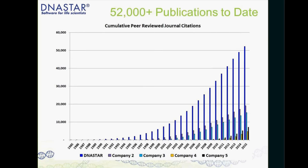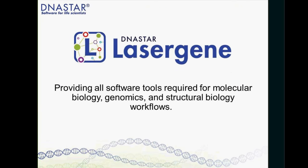We have over 52,000 publications, making us the most published sequence analysis software — back to the 1980s. Our nearest competitor has less than half the publications that we do. This is software created for scientists to do research and publish results. In summary, we provide all the software tools required for molecular biology, genomics, and structural biology — that's really what we're striving for.